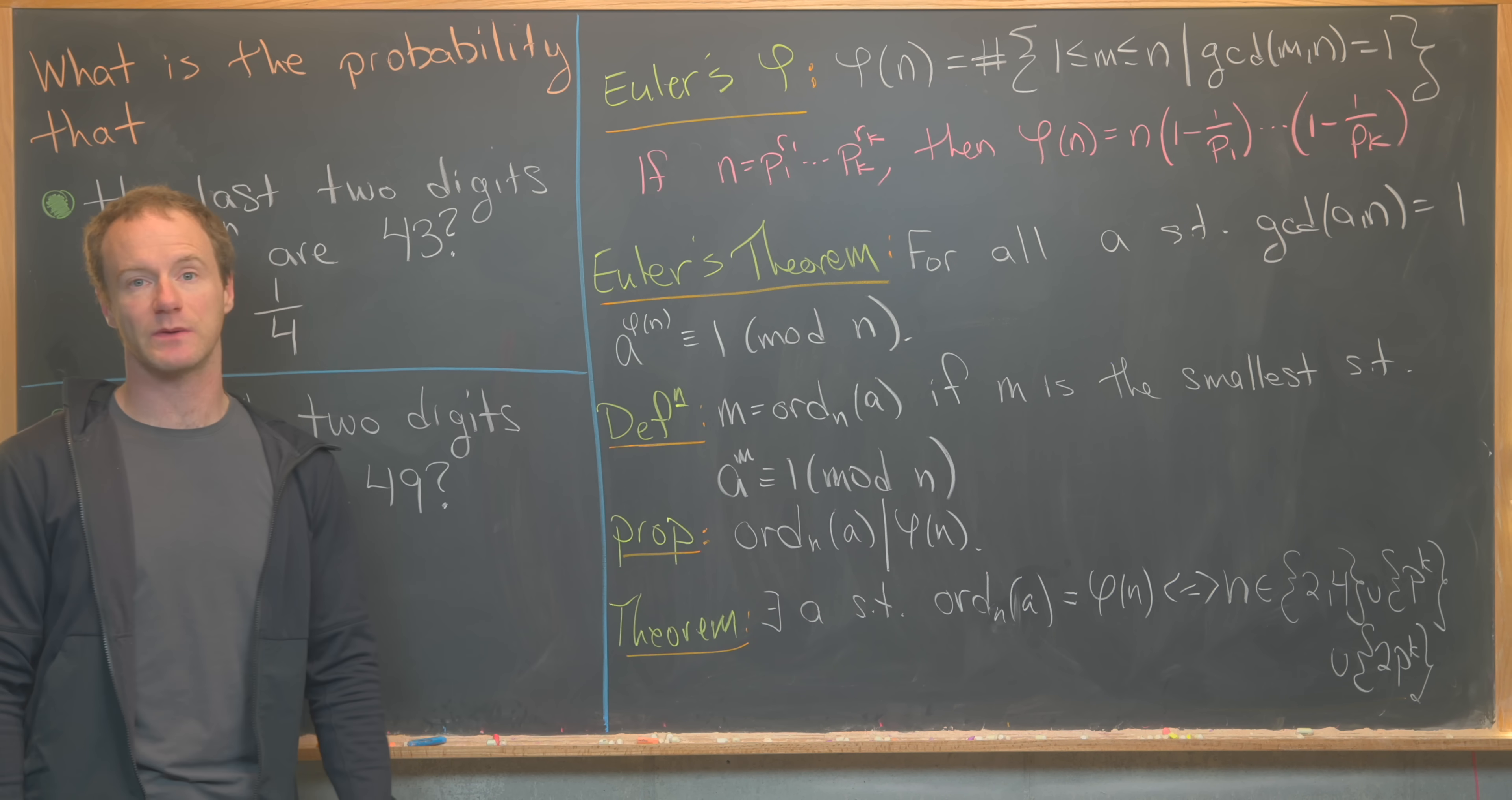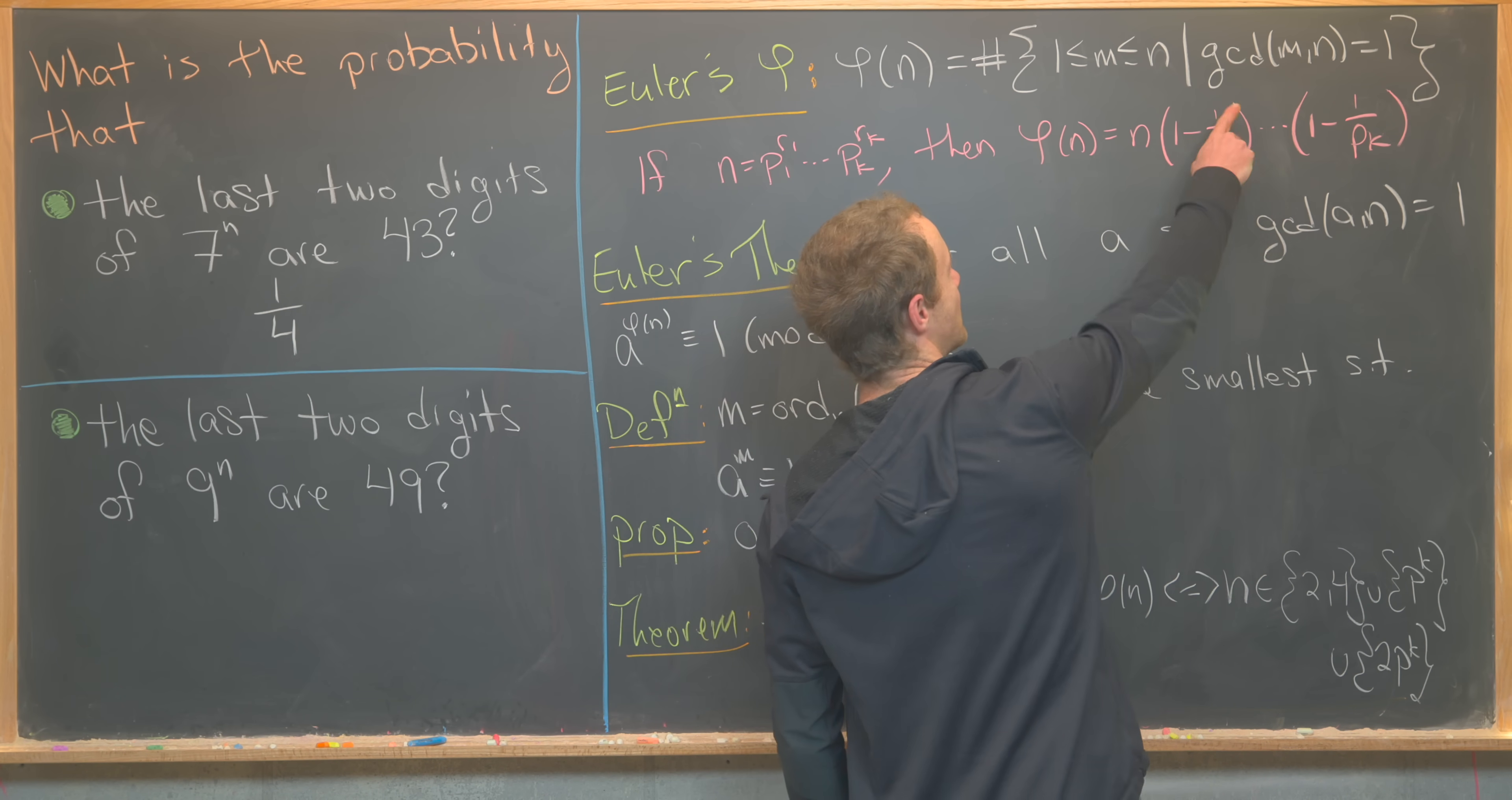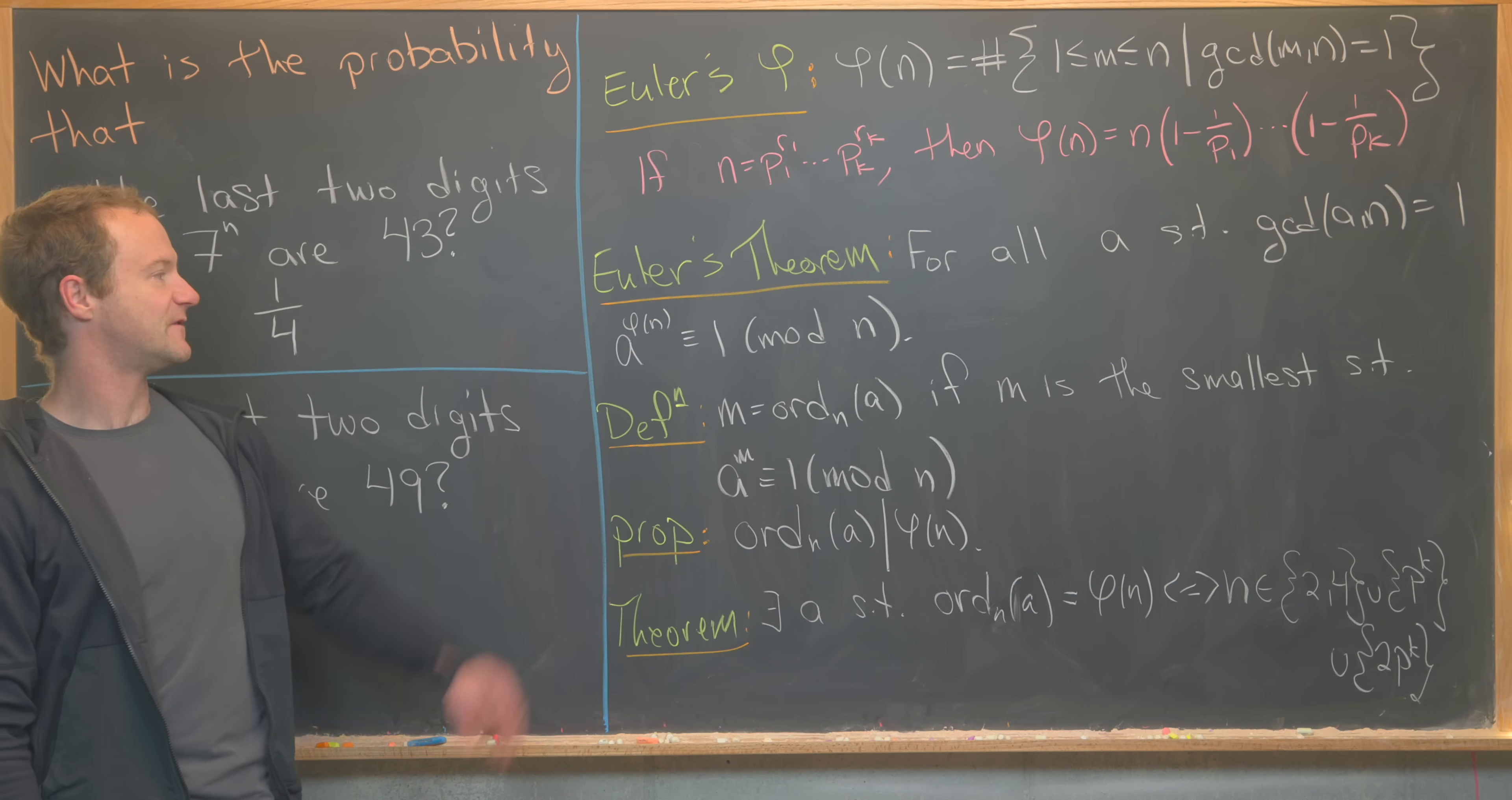Now here's a little result related to the Euler phi function. If n has the following prime factorization, so P1 to the R1 all the way up to Pk to the Rk, then phi of n is equal to n times 1 minus 1 over P1 all the way down to 1 minus 1 over Pk. So that gives you a nice computable way to find phi of n. Next, there's this thing called Euler's theorem, and that says that if we have a number which is relatively prime to n, then a to the phi of n is congruent to 1 mod n.